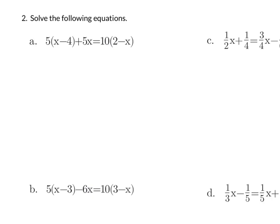For example A, we're going to start with distribution. We get 5x minus 20 plus 5x equals 20 minus 10x. Our next step should technically be to simplify each side if possible, so I'm going to go ahead and combine my 5x's. On the left we get 10x minus 20 equals 20 minus 10x.